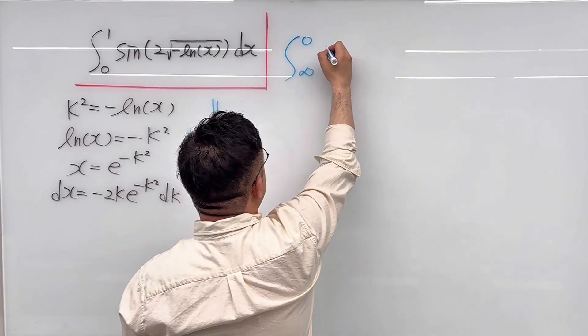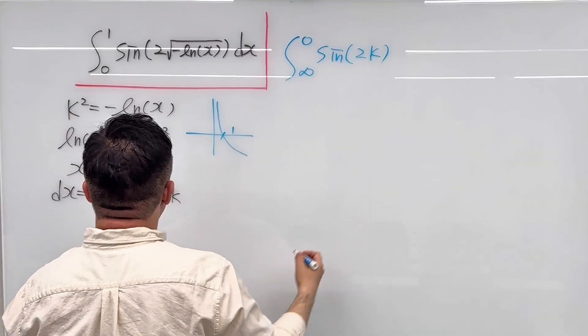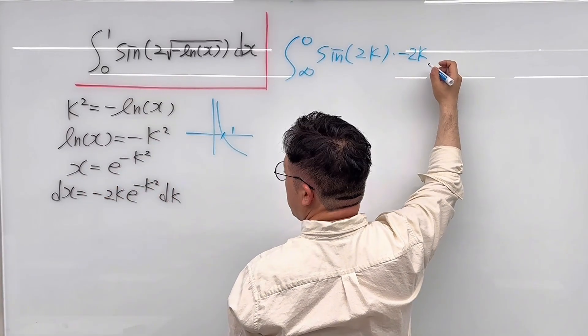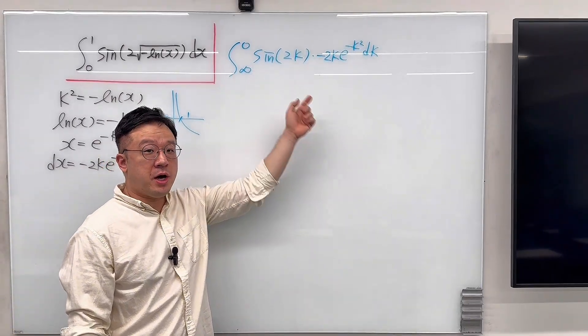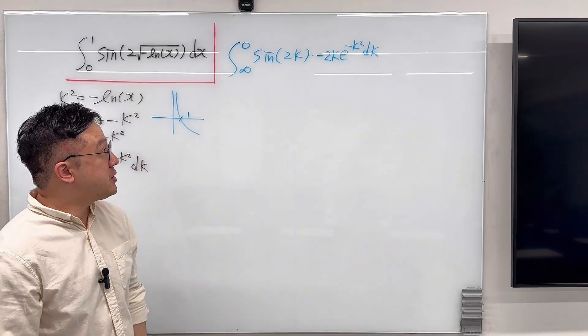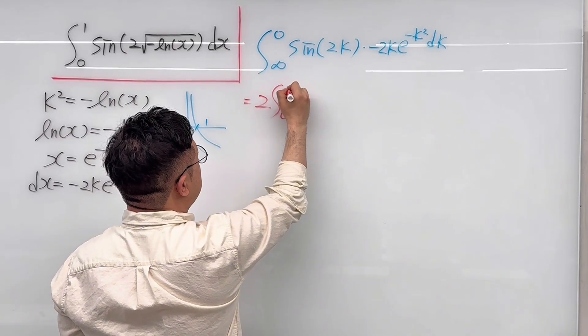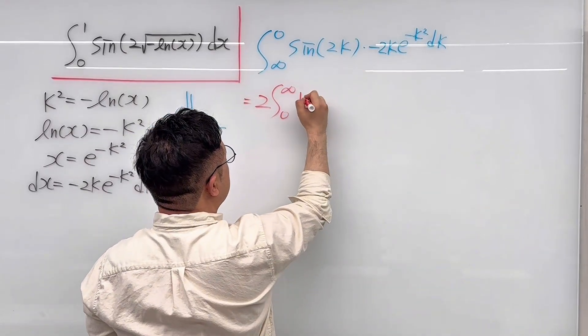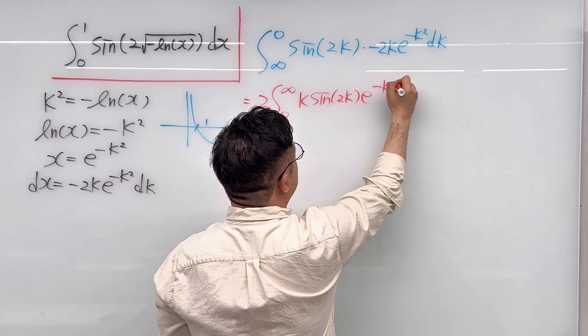Then we have sin(2k), and dx was negative 2k times e to the power of negative k² dk. Switching the lower and upper bounds pulls out a negative, and together with the negative from dx, negative times negative becomes positive. Pulling the 2 outside gives us 2 times the integral from 0 to infinity of k times sin(2k) times e to the power of negative k² dk.